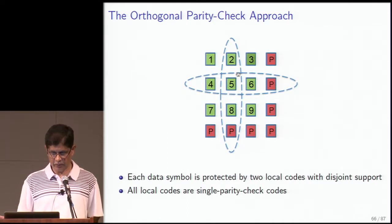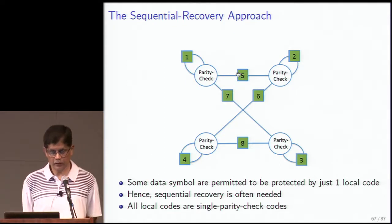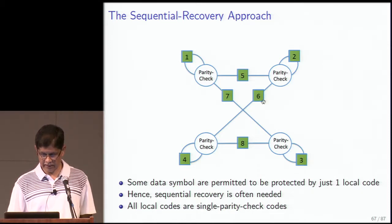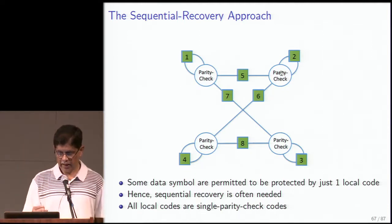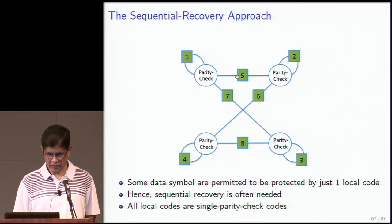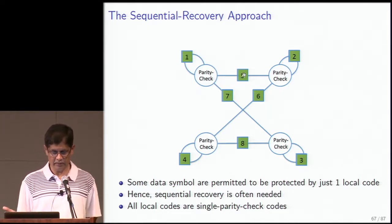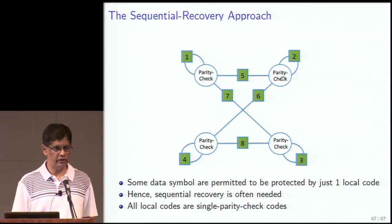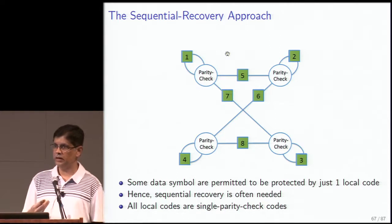For two erasures, if one erased symbol participates in a local code that has another erased symbol in it — that parity is useless and you can't recover it right away. But you can first recover the other erased symbol using a different parity, and then use that to recover the first. This is sequential recovery: some symbols are protected by one local code and that gives you a slight advantage. You're relaxing your requirements a little bit instead of insisting that all symbols are protected by two local codes.